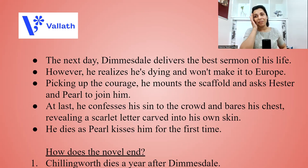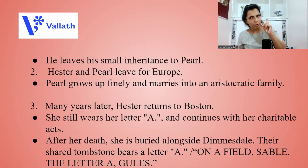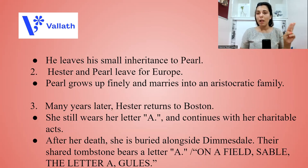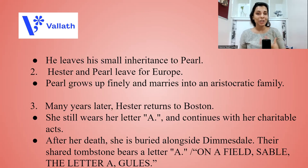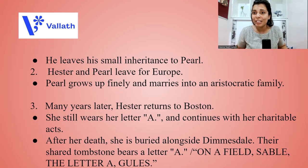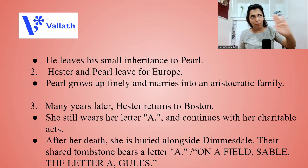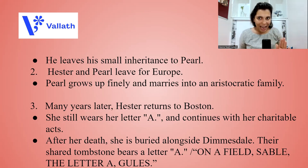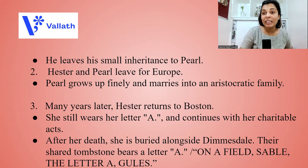As Pearl kisses him for the first time, he dies in Hester's lap. Chillingworth dies miserably a year after Dimmesdale, leaving his small inheritance to Pearl. Hester and Pearl leave for Europe, where Pearl grows up into a fine lady and marries into an aristocratic European family. After many years, Hester returns — she still wears the letter A and does not mind; she has grown up with it, and she had Pearl out of love, not sin. She continues her charitable acts. After her death, she is buried alongside Dimmesdale, and their shared tombstone bears the letter A.